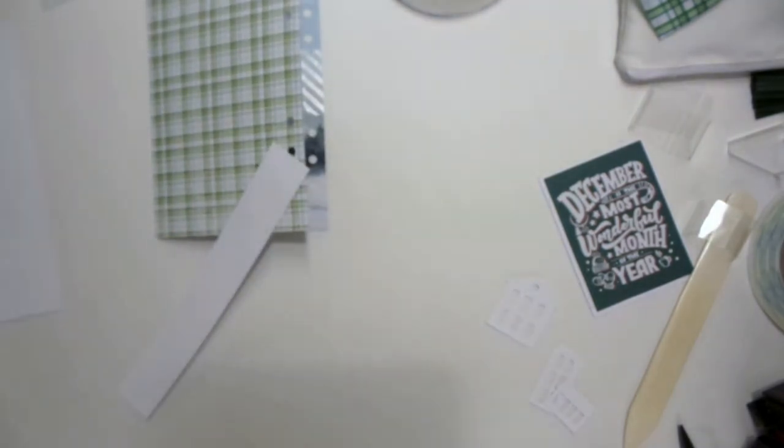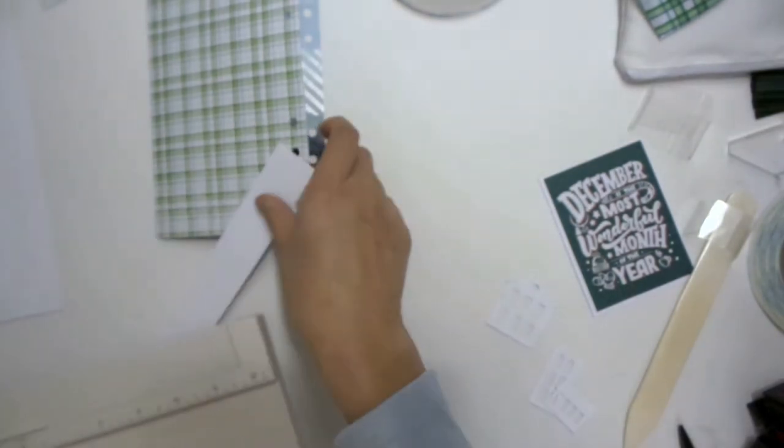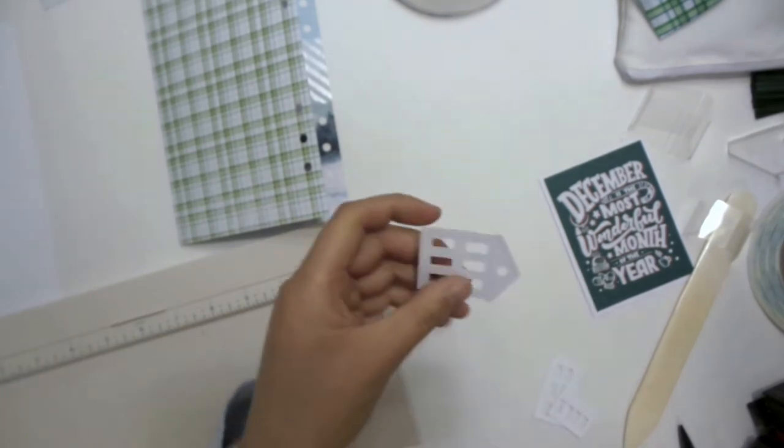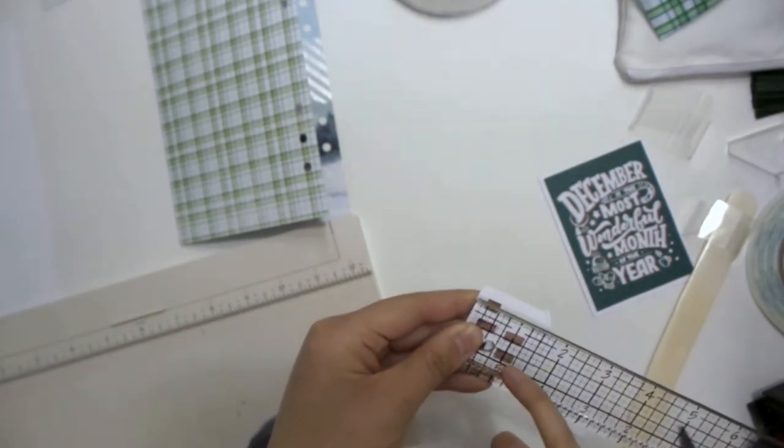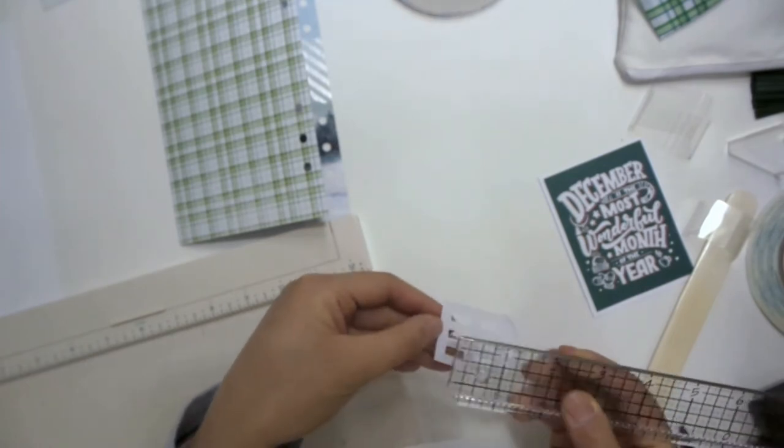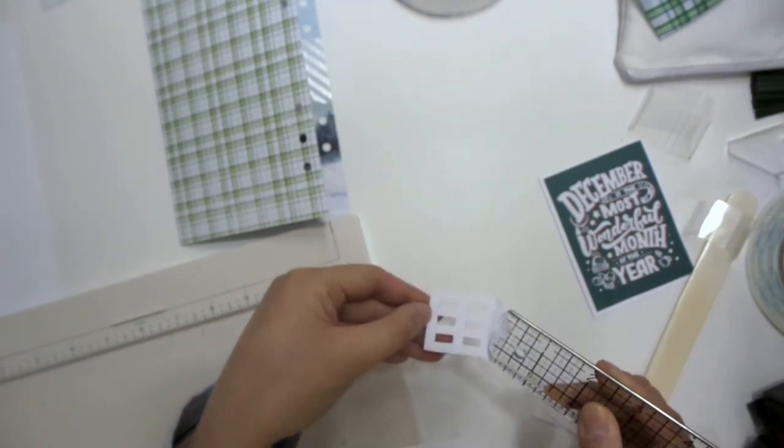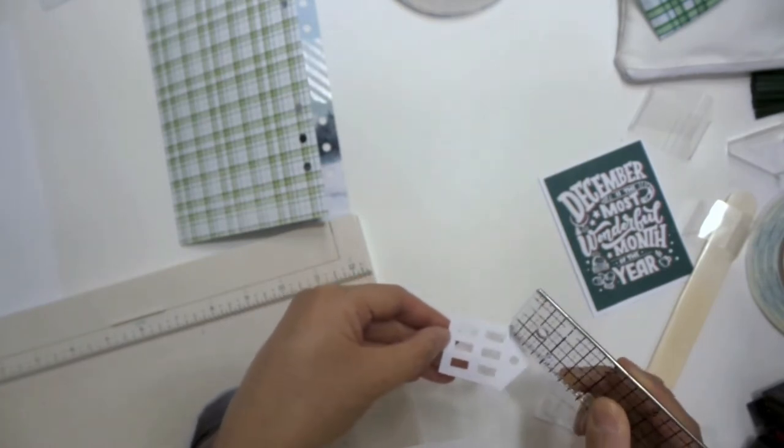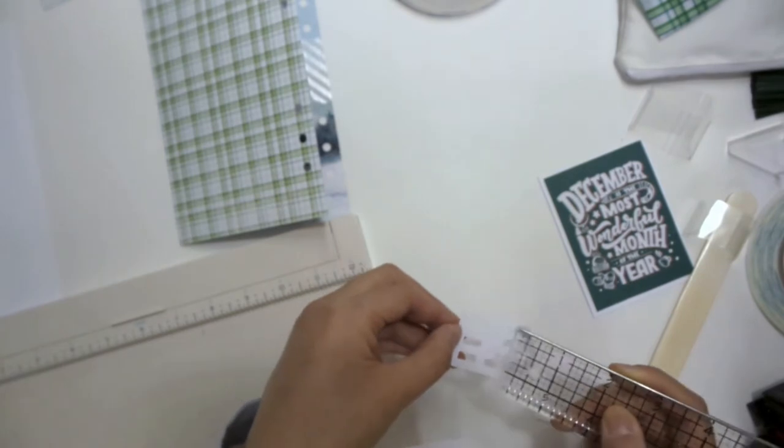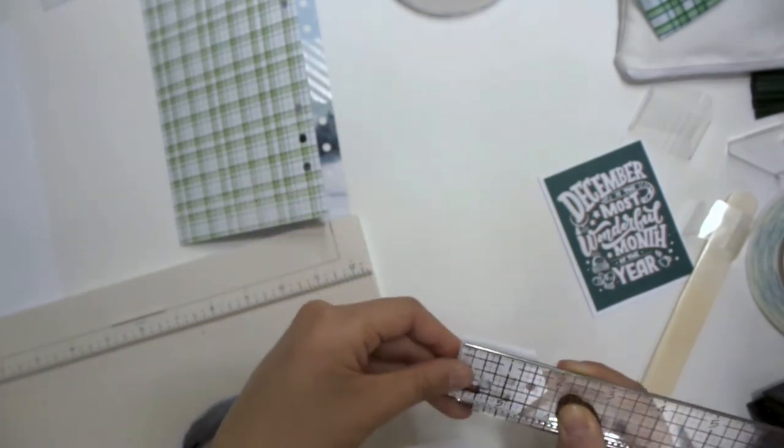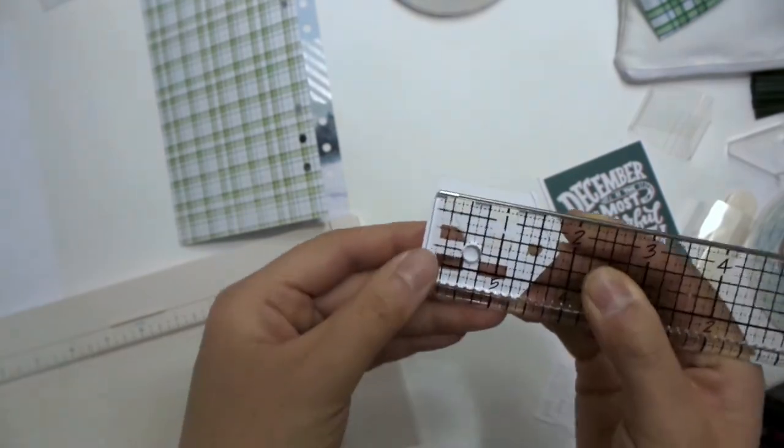So the next thing that we want to do is to create some score marks on this. So I have my scoreboard here. We're going to take the piece and measure the height of the windows. So what we want to do is to create a piece that goes over the window portion and doesn't go beyond that so that you can't see the edges of the piece when it's standing up.